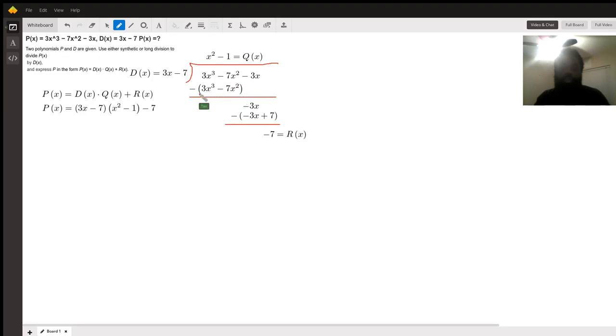We then subtract that to cancel the 3x cubed terms, and in this case the 7x squared terms end up canceling out, and then we bring down the negative 3x.